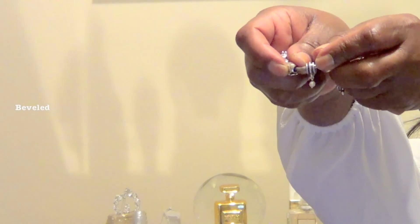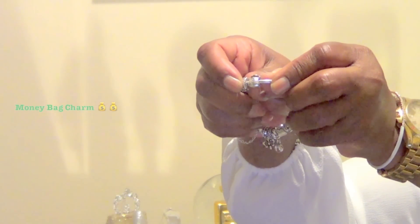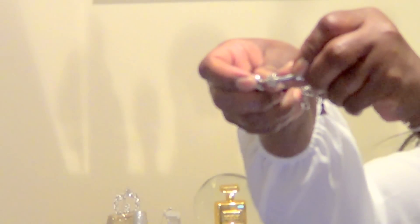This cutie with a little pearl on the end is called beveled. This is the money bag charm. Another S clip.